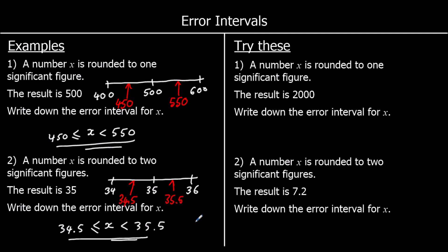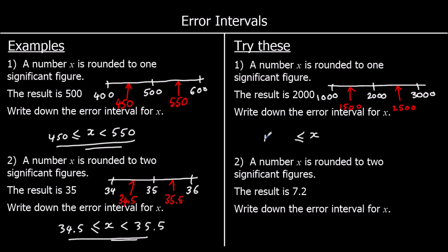Okay, two for you to try. The first one: a number has been rounded to one significant figure and it is 2000. The next one up to one significant figure would be 3000, and the one back is 1000, so our number must be between the halfway points: 1500 and 2500. It's bigger than or equal to 1500 — we would round 1500 to 2000 — but we wouldn't round 2500, so we use a less than sign; if we reach 2500 we would round it to 3000.